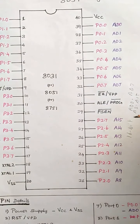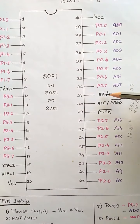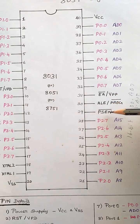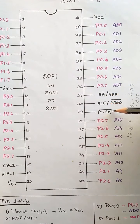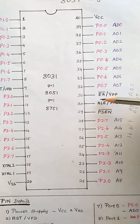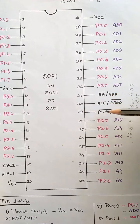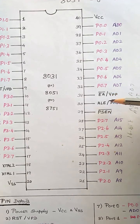The remaining three pins required for external memory interfacing are EA bar, ALE, and PSEN. EA stands for External Access, ALE stands for Address Latch Enable, and PSEN stands for Program Store Enable. These three pins play a main role in external memory interfacing.